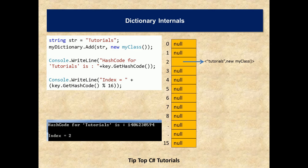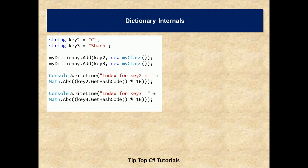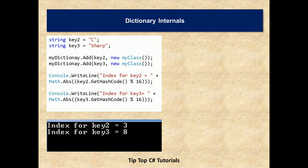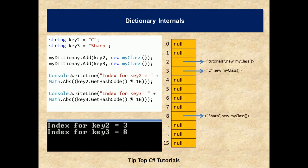Now, let us see some more items and see how dictionary behaves internally. Let us try to add two keys one is C and another one is sharp. We try to calculate index for this one by using our existing formula that is hash code divided by size or capacity. We can see that for key 2 the index will be 3. For key 3 the index will be 8. Now, the internal hash table will be updated like this. As you can see that at index 3 we can see that a key value pair has been added. At index 8 you can see that we are having another key value pair.